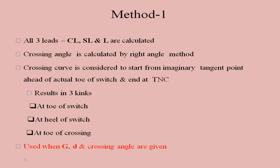There are three methods adopted for the design of turnout. In the first method, all three leads are calculated: curve lead, switch lead, and crossing lead. In this method, the crossing angle is calculated by the right angle method. There is the center line method, right angle method, and isoculus method. The right angle method is adopted for Indian railways, so the crossing angle is calculated from the right angle method.